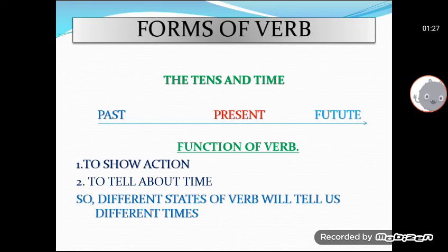And if there is a present form of verb it will tell you the present time. And if there is third form of verb it will tell you the completeness of action. And if there is a form of verb with 'will' or 'shall' it will tell you the future. So it means that different states of verb will tell us different times. That's why we are going to learn about forms of verb.